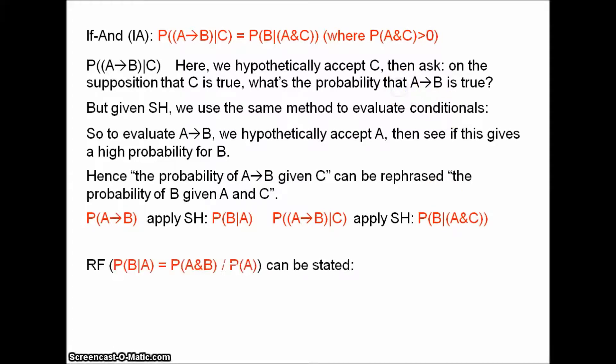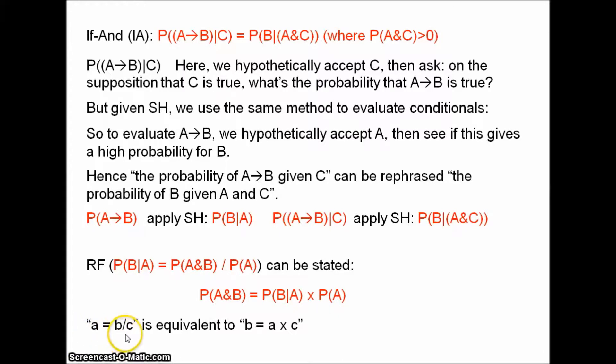Finally, note that the ratio formula can be equivalently stated as: the probability of A-and-B equals the probability of B given A times the probability of A. This is a basic mathematical equivalence — A equals B divided by C is equivalent to B equals A times C — and stating the ratio formula this way just makes it easier to present the proof. Throughout the proof I'm going to use the capital letters Q and R as propositional variables rather than A and B. This is just stylistic — it makes it easier to see what's being substituted for what.